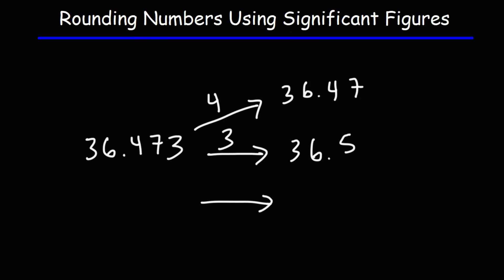What if we want to round that same number to two significant figures? So 6 is the second significant digit. Looking at the number to the right of 6, that's a 4. So that's not 5 or more, which means we're going to round down. So 36.473 will be rounded to 36.